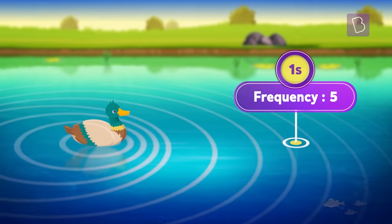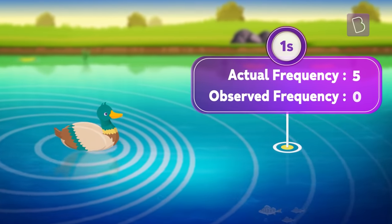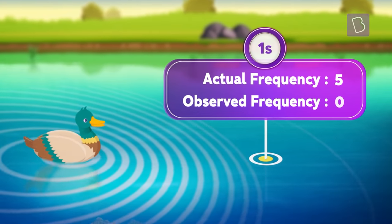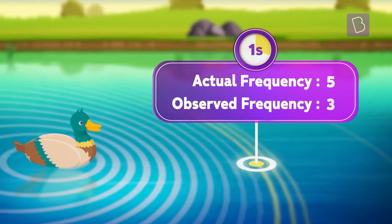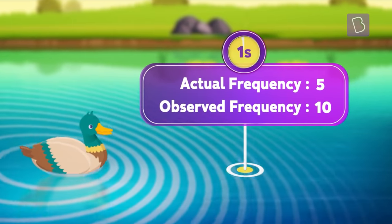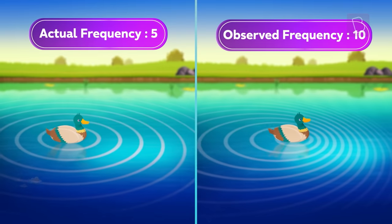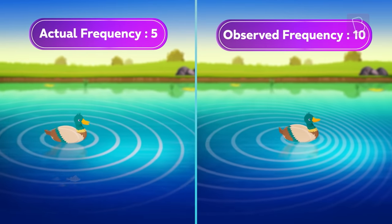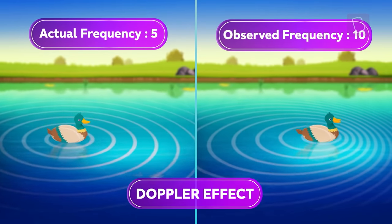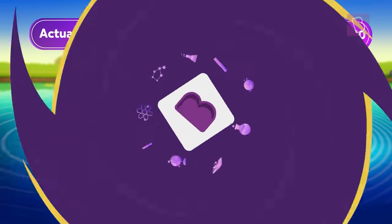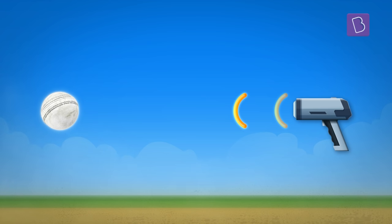Now, as the duck moves, the pattern changes. We see more waves passing by the point in the front, increasing the observed frequency as compared to the actual. This phenomenon of apparent change in frequency is called the Doppler effect. And the same principle is employed by the radar gun.